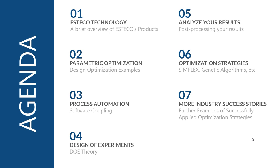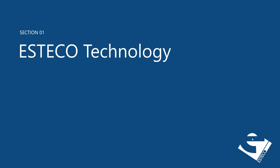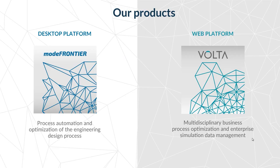The agenda for this one-hour webinar will start with a very brief overview of the products that Azteco offers, and we'll get into some general examples of parametric optimization and how that's accomplished through process automation, design of experiments, and post-processing. Then we'll add some intelligence using optimization strategies and conclude with a few powerful industrial success stories. Azteco sells two products: our desktop platform called Mode Frontier and our web platform called Volta.